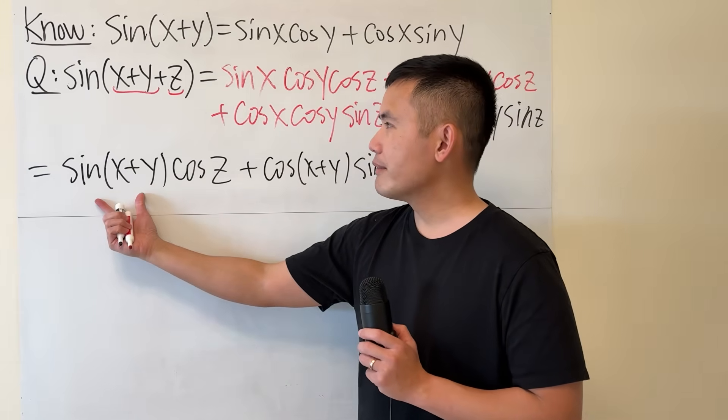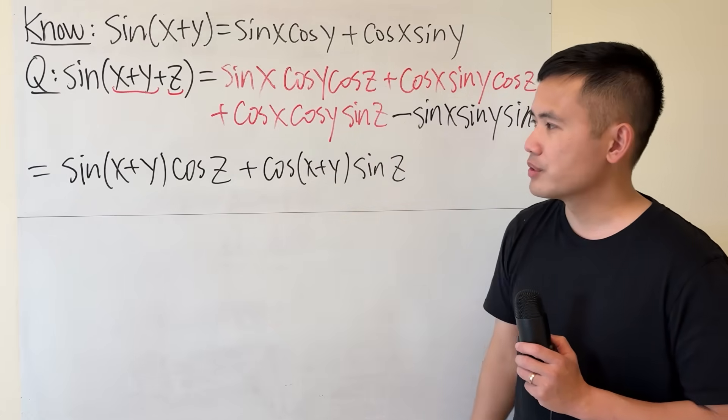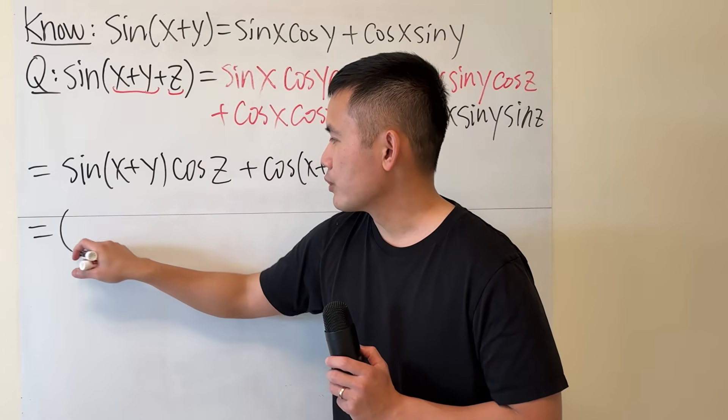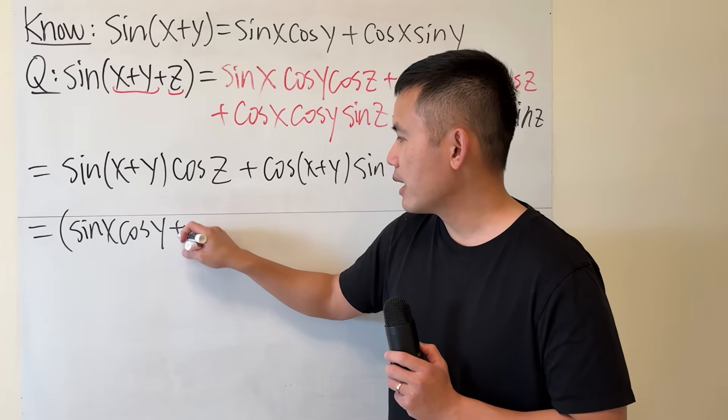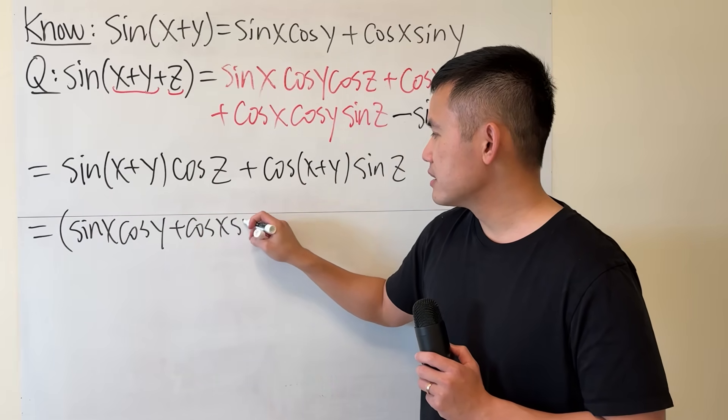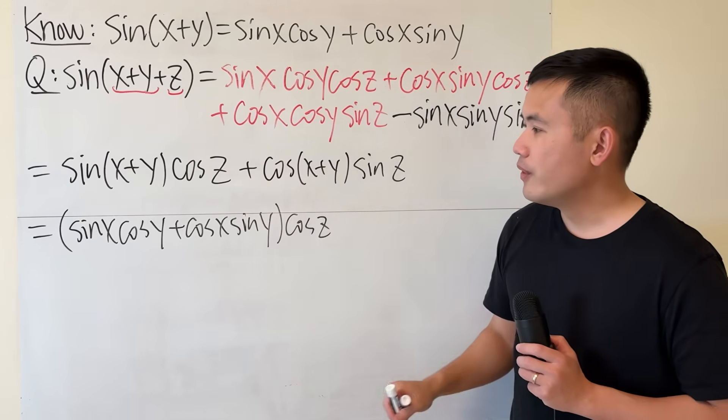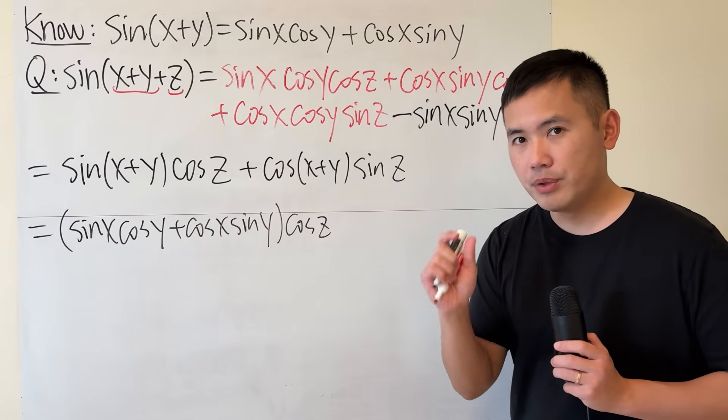Have a look. Here we have to use the original version and we also have to use the cosine version, but it's okay. We can do it. This right here is just going to be, I'll write it down, sine x cosine y plus cosine x sine y, and then we multiply that by cosine z.